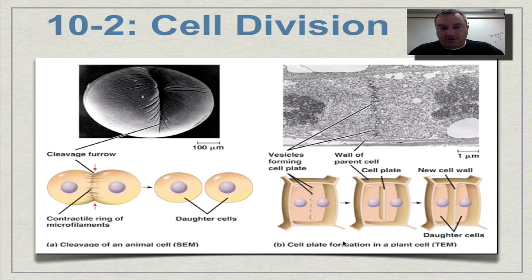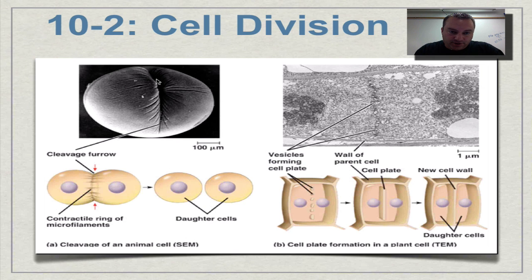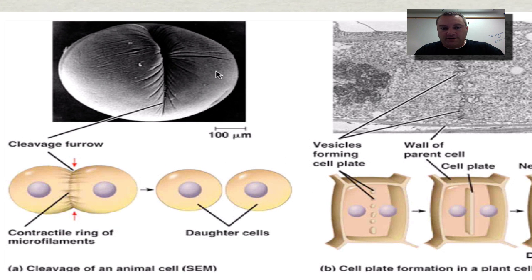As you look over here on the left of your screen, this is what's happening in the animal cell. In this cleavage furrow, kind of think of how it's starting to get sliced right down here, so that this is going to be one daughter cell and this is going to be the other daughter cell.